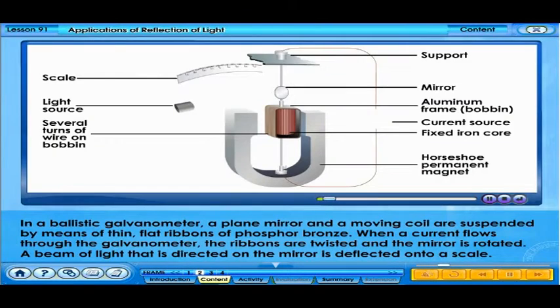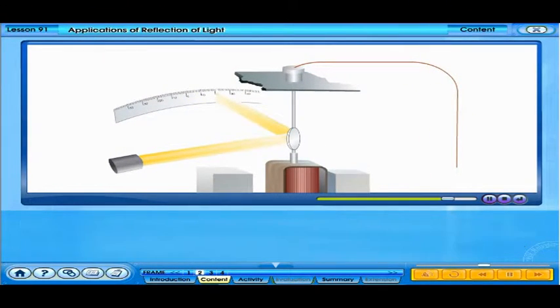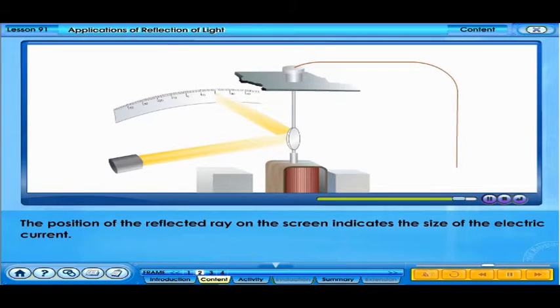In a ballistic galvanometer, a plane mirror and a moving coil are suspended by means of thin, flat ribbons of phosphor bronze. When a current flows through the galvanometer, the ribbons are twisted and the mirror is rotated. A beam of light that is directed on the mirror is deflected onto a scale. The position of the reflected ray on the screen indicates the size of the electric current.